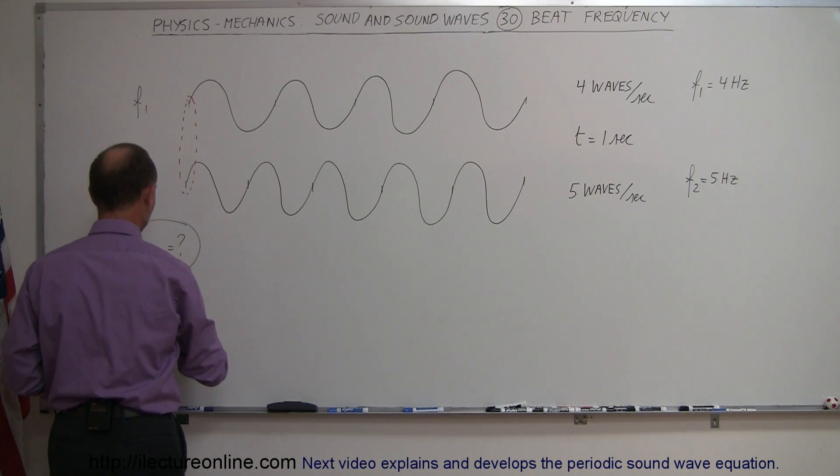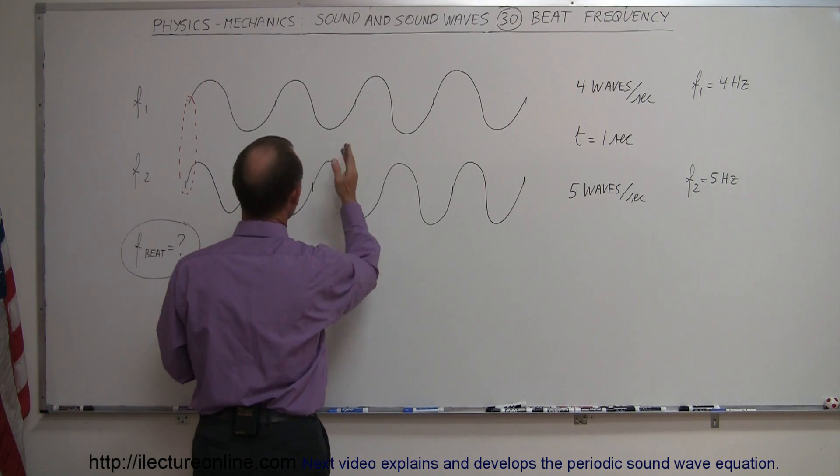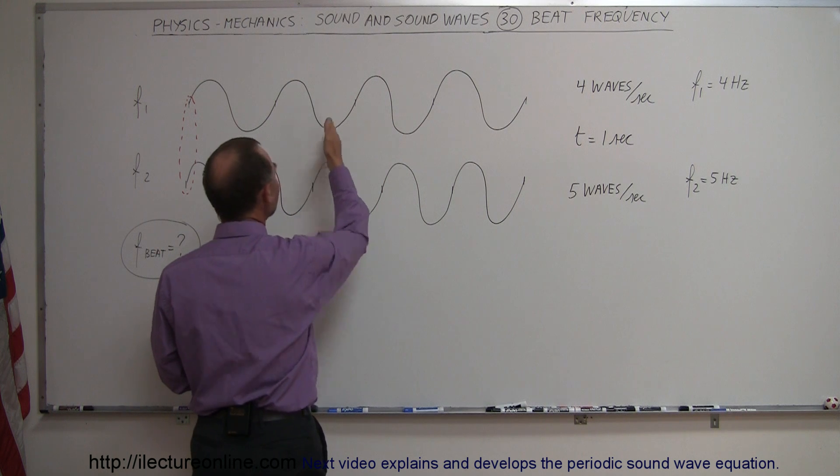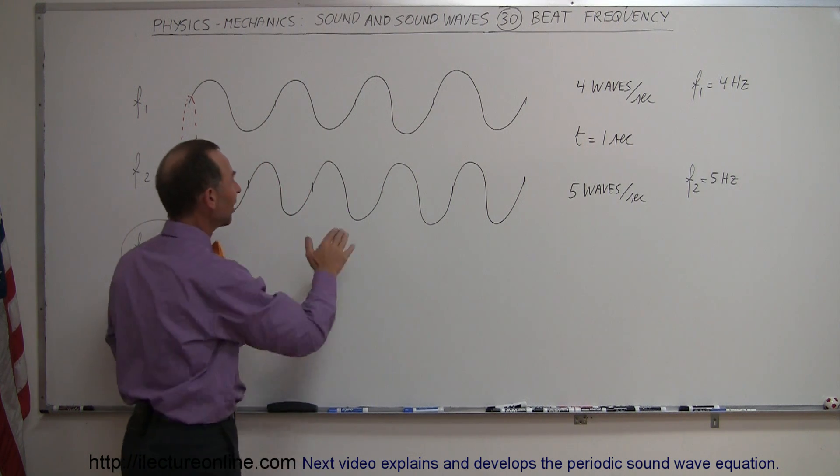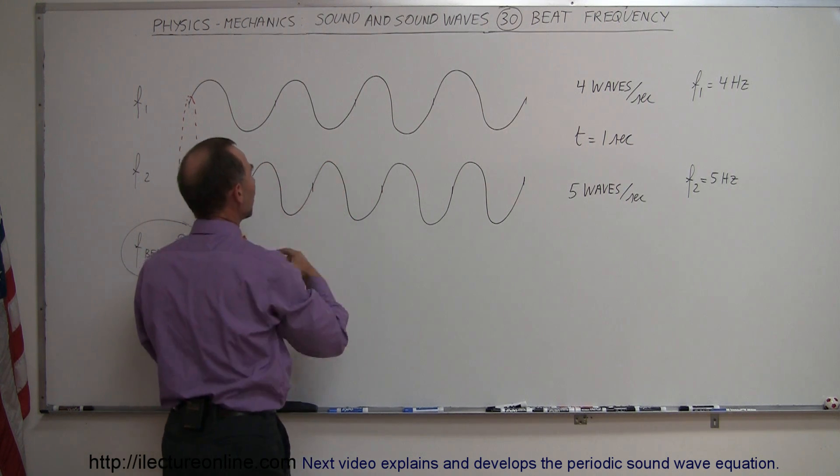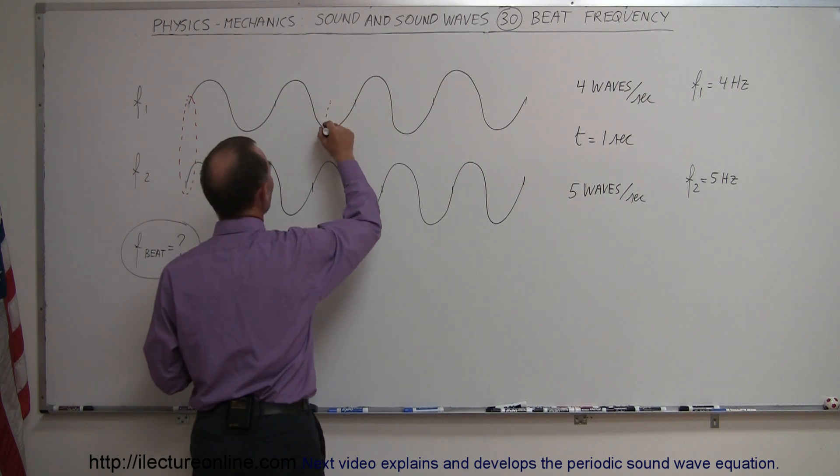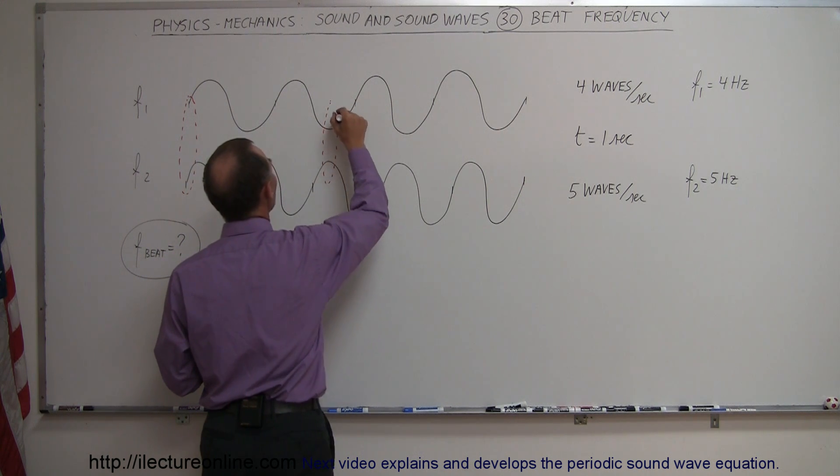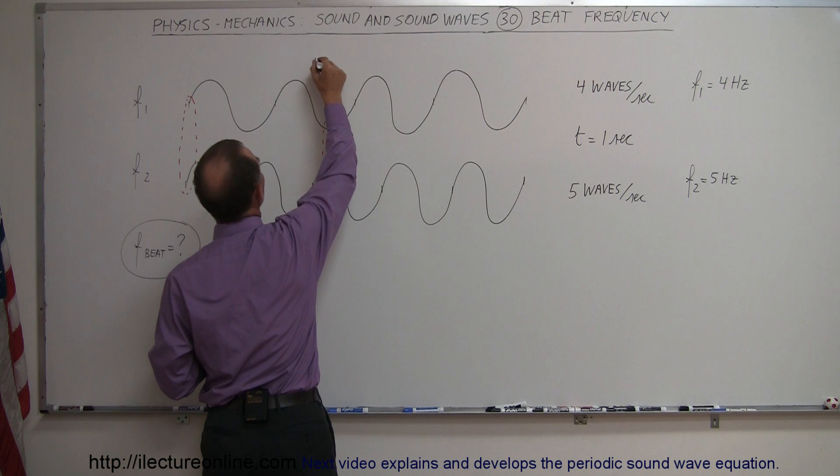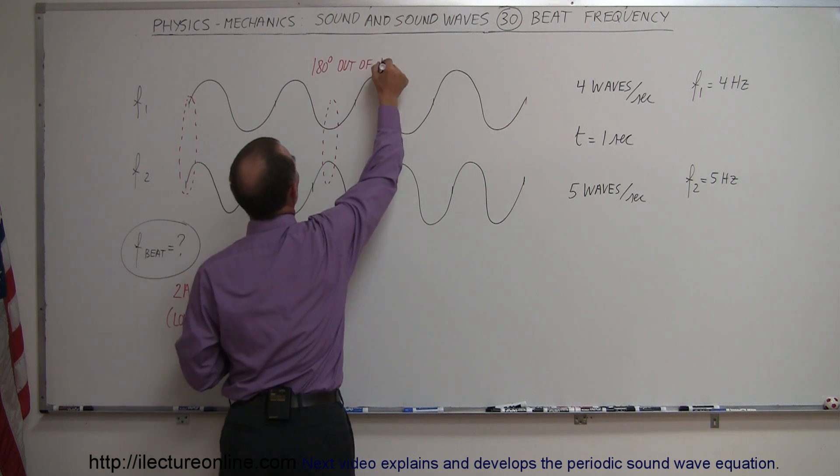And then notice that at some point over here, at the halfway point, they're exactly 180 degrees out of phase. So this is at a minimum when this is at a maximum. So at this point the two waves are completely out of phase by 180 degrees.